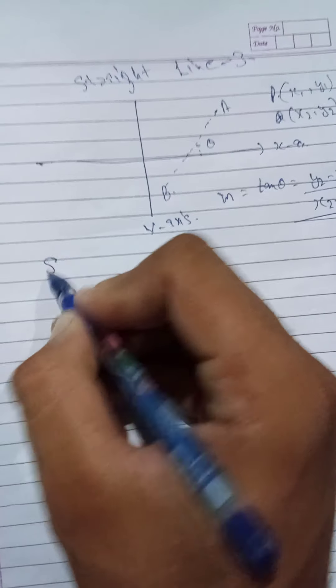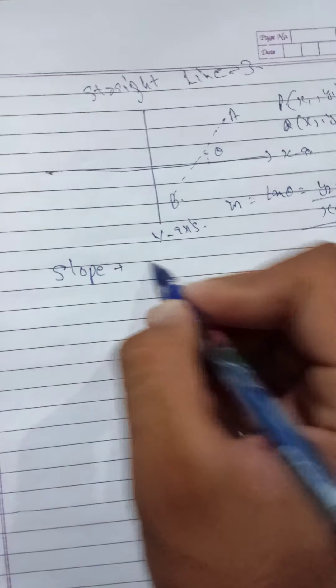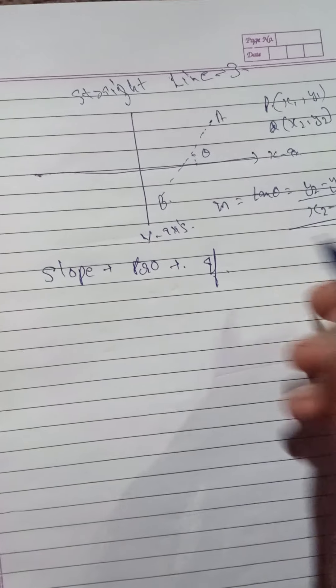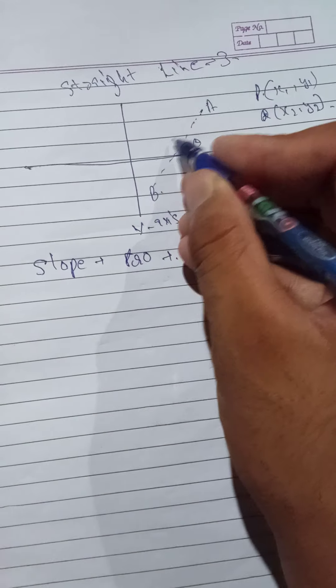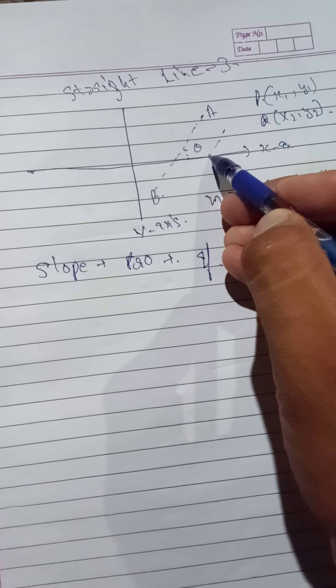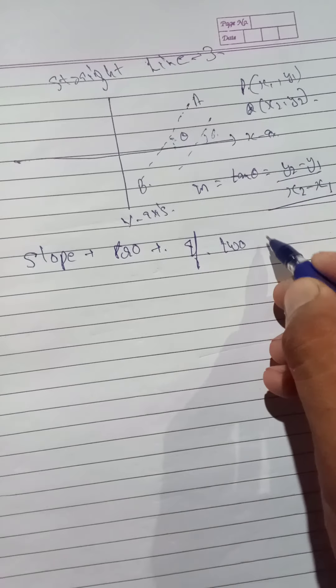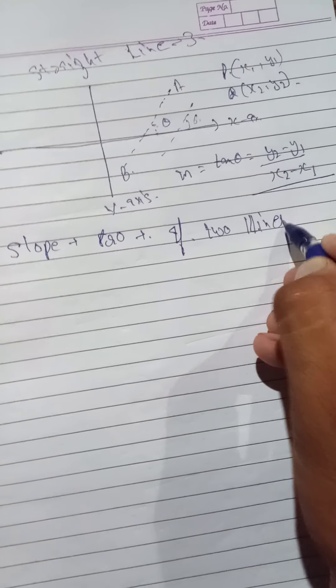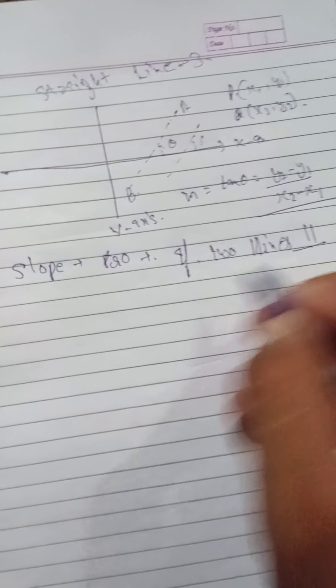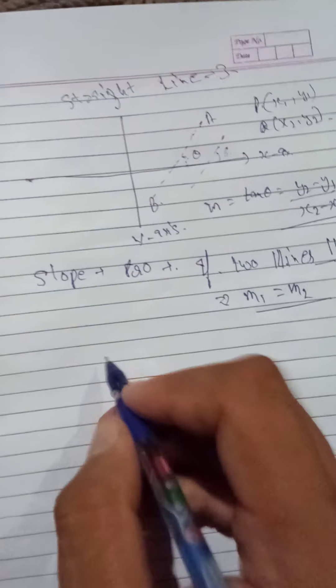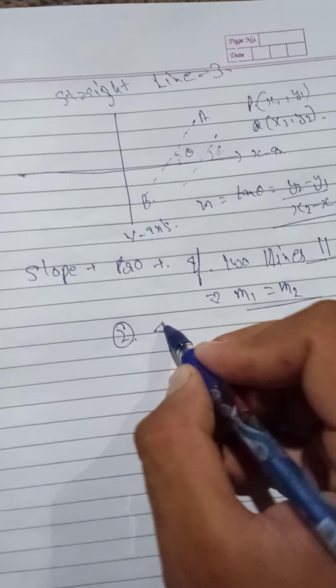Also there are some properties of slope. If two lines are parallel, assume that one line is parallel here, so this will also be the theta. It means if two lines are parallel, then their slope will be equal, that is m1 is equal to m2.